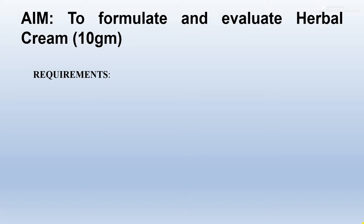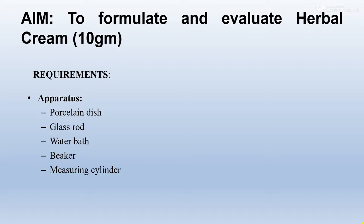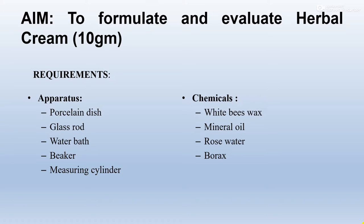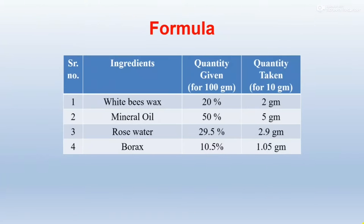The requirements for the practical: apparatus required are porcelain dish, glass rod, water bath, beaker, and measuring cylinder. Chemicals required are white beeswax, mineral oil, rose water, and borax. The formula is for 100 grams; we are preparing 10 grams — white beeswax 2 grams, mineral oil 5 grams, rose water 2.9 grams, and borax 1.05 grams.